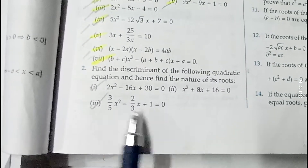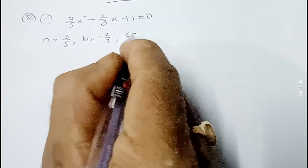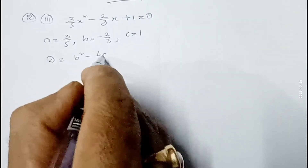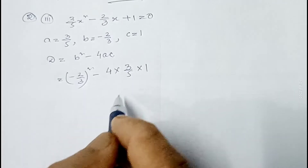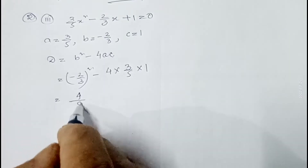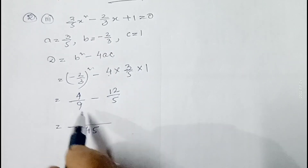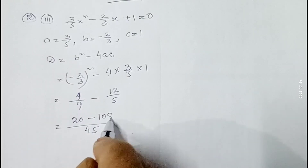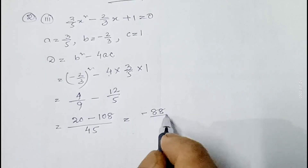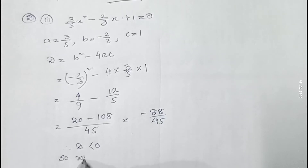Let me show the third part of question number two: (3/5)x² - (2/3)x + 1 = 0. Here a = 3/5, b = -2/3, c = 1. Discriminant D = (-2/3)² - 4×(3/5)×1 = 4/9 - 12/5. Taking LCM 45: 20/45 - 108/45 = -88/45. Since D < 0, roots are not real.